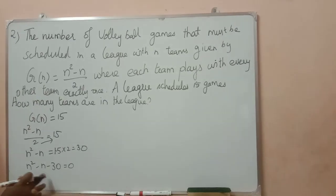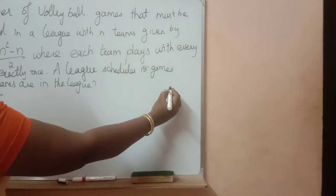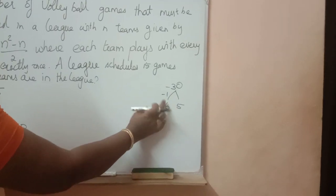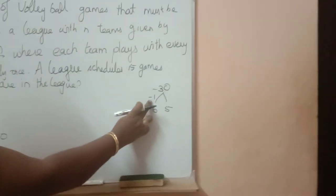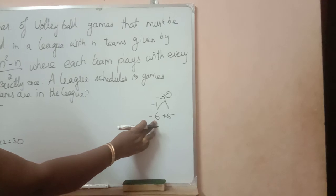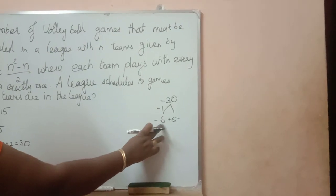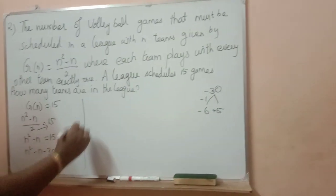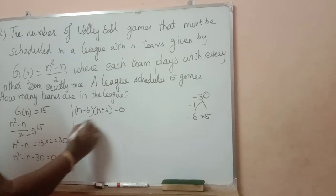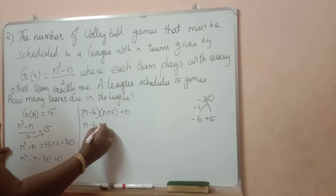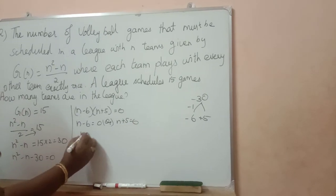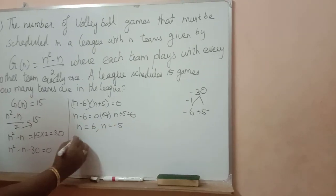6 and 5: their product is 30. See, by subtraction we can get 1. If you subtract and get this number, give this sign to the greatest number, opposite sign to the smallest number. Now verify: minus 6 plus 5 is minus 1. Minus 6 into 5 is minus 30. So, the factors are n minus 6, n plus 5 is equal to 0. So, first bracket equal to 0 or second bracket equal to 0. So, n equal to 6, n equal to minus 5.